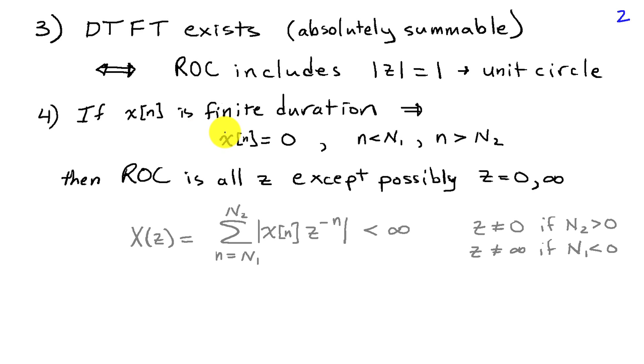Next, if x of n is a finite duration sequence, in other words, it's 0 outside of some interval n1 to n2, so for lower case n less than capital N1, and for lower case n greater than capital N2, we're assuming that x of n is 0. Well, in this case, the ROC is all the Z-plane except possibly z equals 0 or infinity.